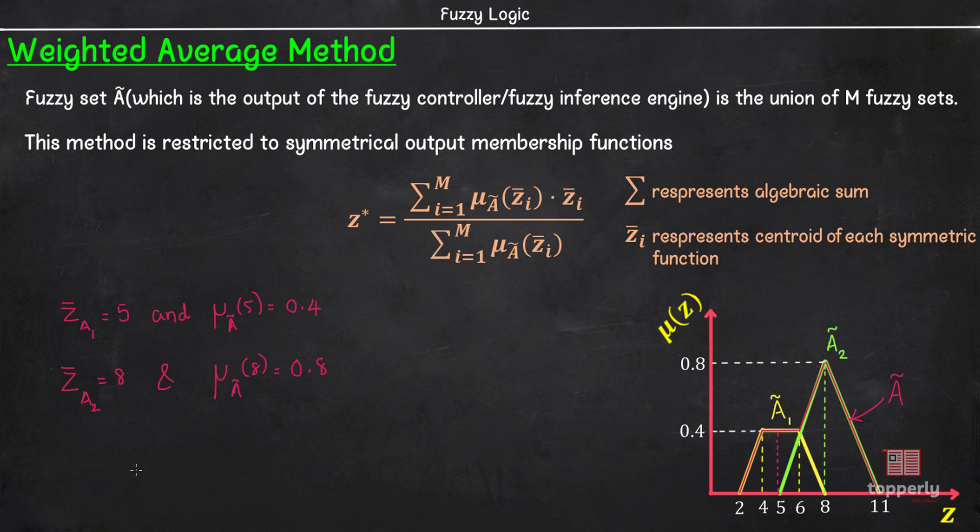So, the defuzzified value z* is equal to 7.